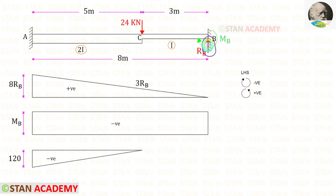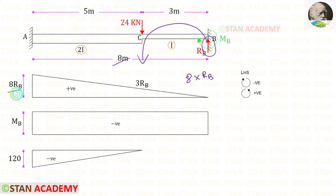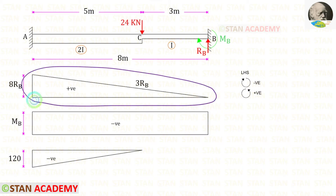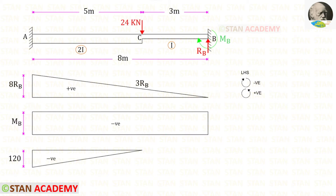First let us take Rb. It is acting in the anti-clockwise direction, so it will be positive, and the distance is 8. We get 8Rb, and the diagram will be in the shape of a triangle. We can also find the bending moment at point C: Rb into 3 gives us 3Rb.